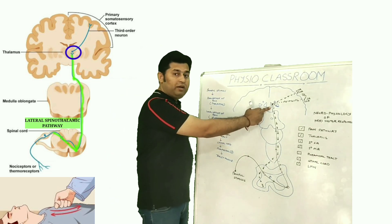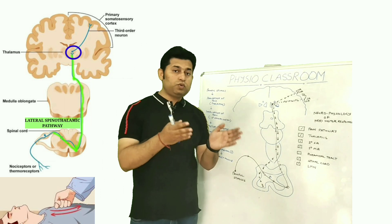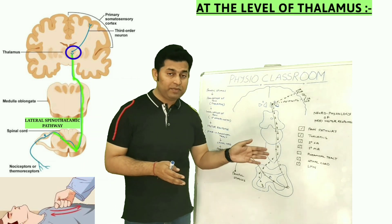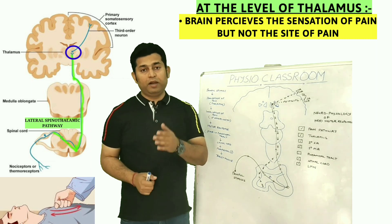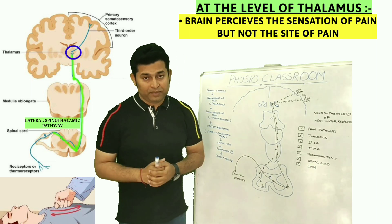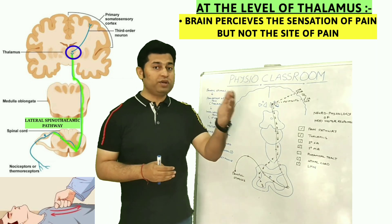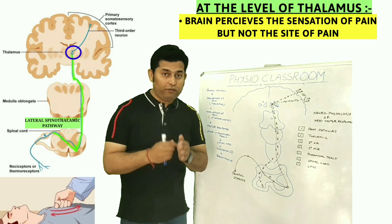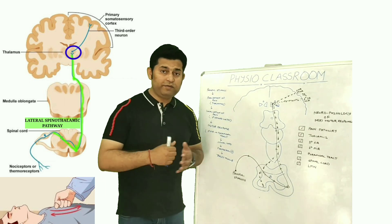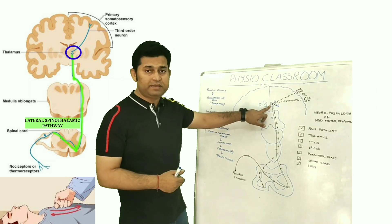The student should note here that once the information reaches the thalamus, the brain is able to perceive a painful stimulus, but the brain still doesn't know which particular part of the body the stimulus is originating from. This information that has reached the level of the thalamus is then carried further up.